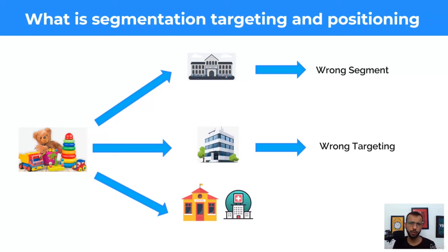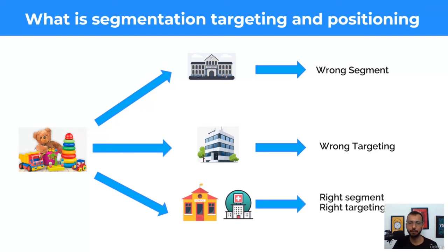When kids go to a hospital they are usually emotional — they start crying — and the parents have to purchase toys for them. The same situation happens near a school: kids start crying and their parents need to give them something to stop crying. That's why this is the right segment and the right targeting strategy, allowing you to sell your product to people.